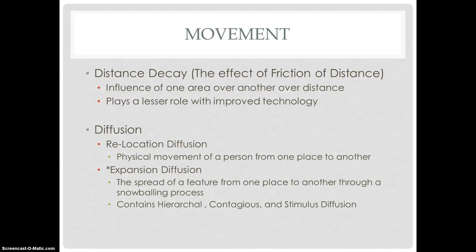The second type of diffusion is expansion diffusion. Expansion diffusion is the spread of a feature from one place to another through a snowballing process. There are actually three types of expansion diffusion: hierarchical diffusion, contagious diffusion, and stimulus diffusion.